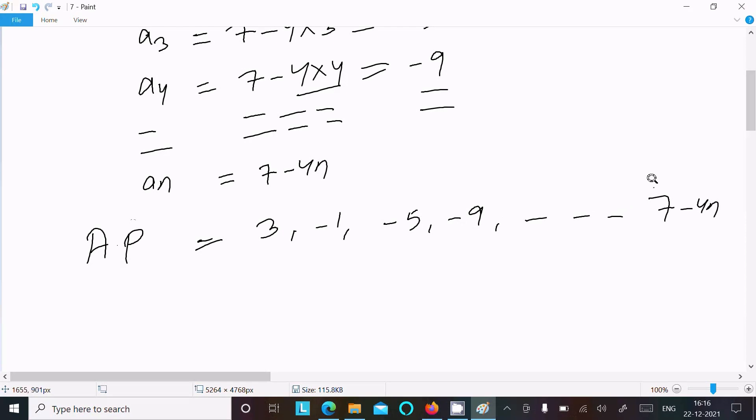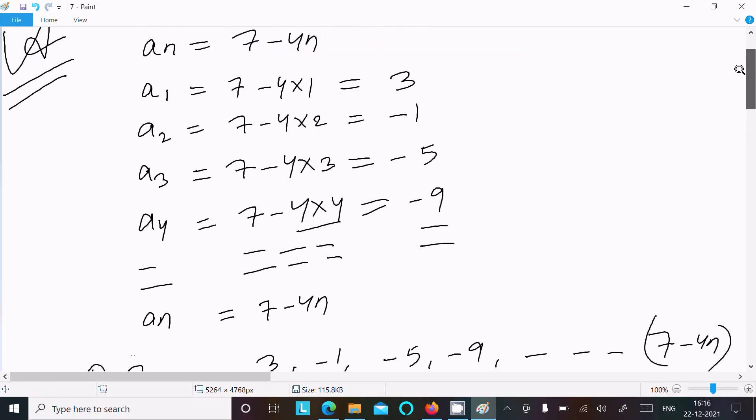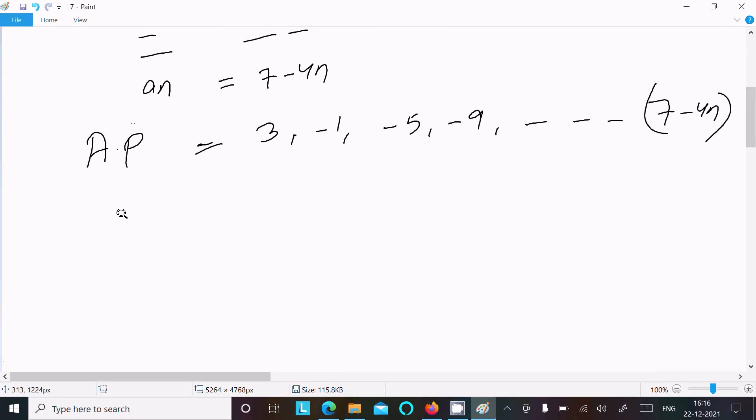So we need to find the common difference. Common difference is second term minus first term or third term minus second term, so difference of two consecutive numbers. So minus 1 difference here minus 3, so this comes the value minus 4. So d is now minus 4, that's the answer.